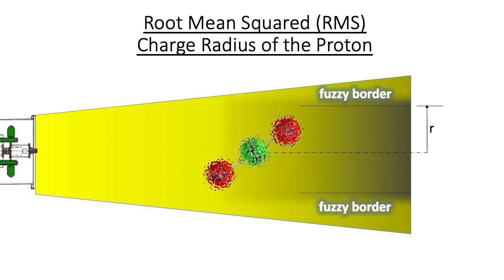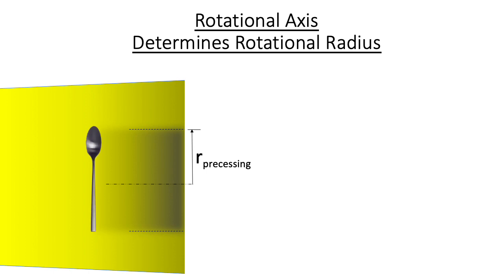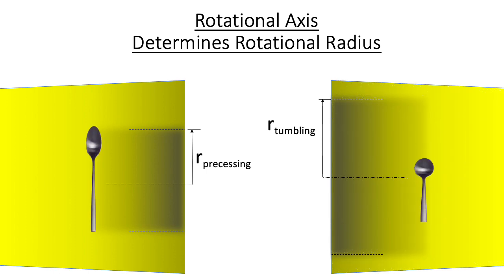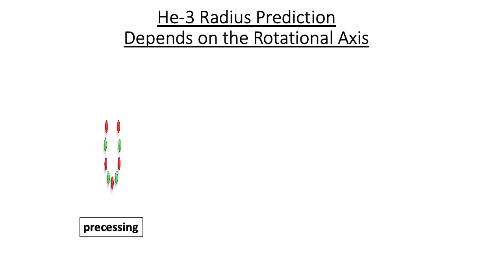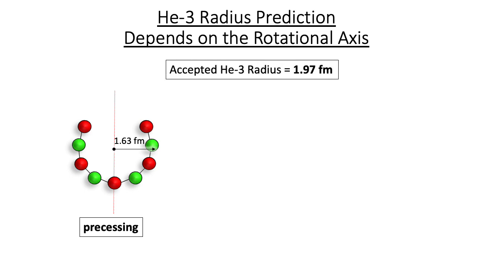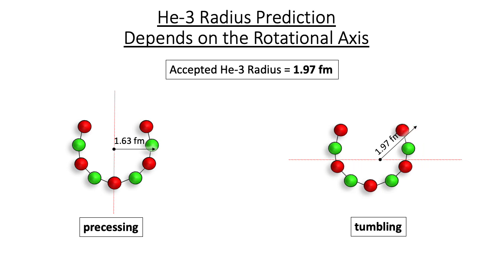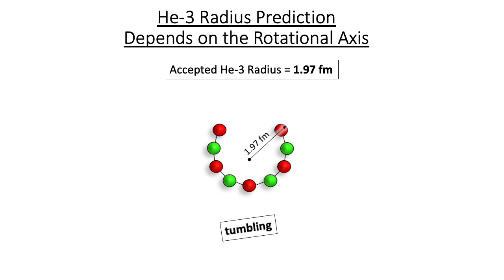The currently accepted RMS charge radius of the proton is 0.84 femtometers. For an irregular object such as a tablespoon, the manner of rotation plays a major role in determining the rotational radius. A precessing tablespoon will have a smaller rotational axis than the same tablespoon tumbling about its center of mass. In the case of helium-3, a precessing rotation results in a rotational axis of 1.63 femtometers — much smaller than the accepted radius of 1.97 femtometers. However, a tumbling rotation results in a rotational radius of 1.97 femtometers, an exact match to the accepted value. For this reason, we predict a tumbling rotation for helium-3, wherein the radius is the distance from the center of mass to the farthest quark.